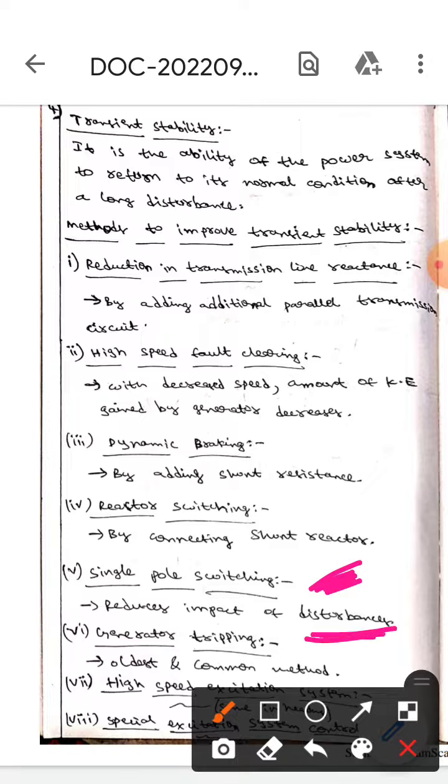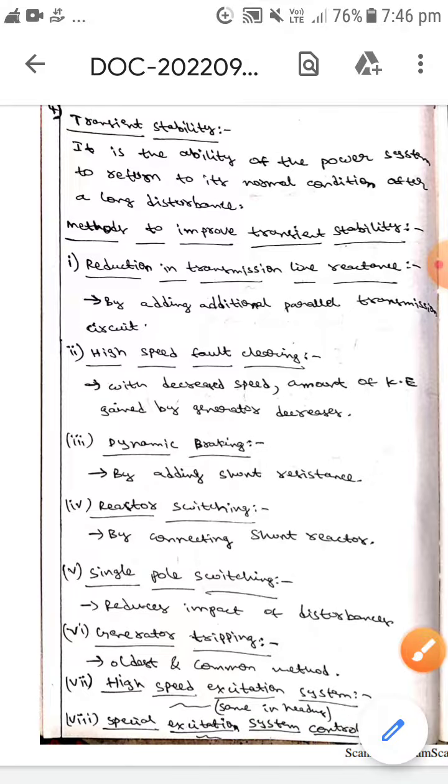and common method. By using this method we can also improve transient stability. The next one is using high speed excitation systems and special excitation system control. We can improve transient stability with these.